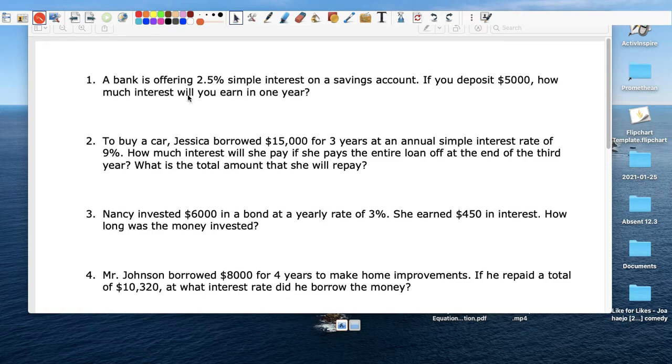In this video, a bank is offering a 2.5% interest rate, so that's R. We deposit $5,000, so that's P, our principal. How much interest will you earn? So we're looking for I. And this is one year, which is our time T.